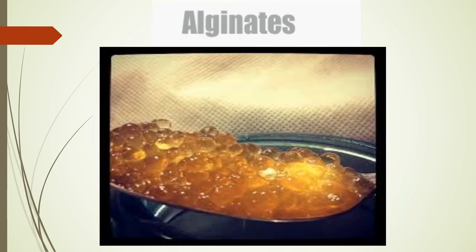Alginate is a cell wall constituent of brown algae. It is a chain-forming heteropolysaccharide. It helps in reducing the amount of strong chemicals such as barium, tin, cadmium, magnesium, zinc, and mercury. It is used in peel-off facial masks and helps lower cholesterol and treat high blood pressure.